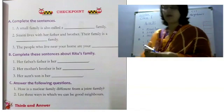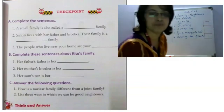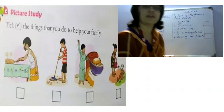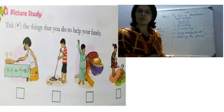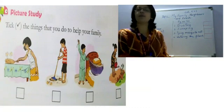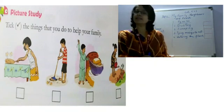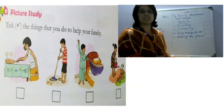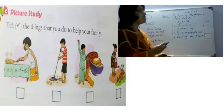Now coming to the next page, page number 22. Here in this page, there is a picture study where you have to look into the picture and pick the things that you do to help your family. If you are doing it, please put a tick mark. If you are not doing it, put a cross mark. Now, first question. Pick the things that you do to help your family. First one, dusting.